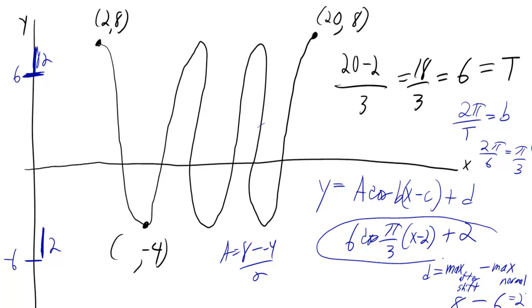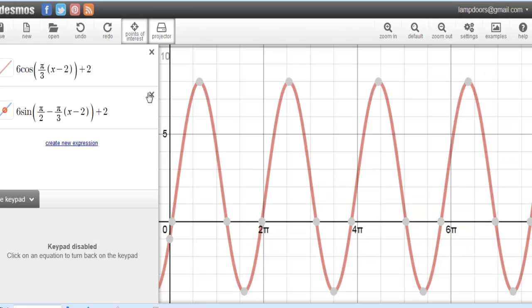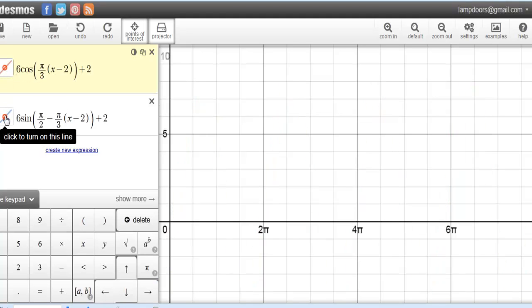Okay, so we got our formula right here, and you can double-check it by using a nice graphing calculator that I found—desmos.com—and I've already plugged that in for you. So it's 6 cosine of π/3 times (x minus 2) plus 2. Now I'm going to turn that one off and turn this second one on.